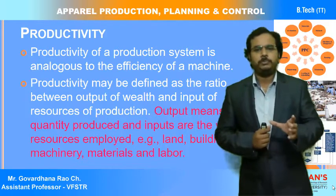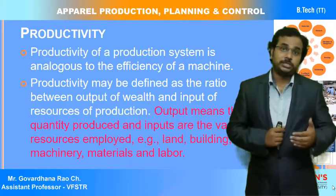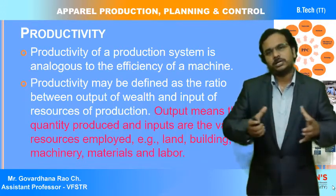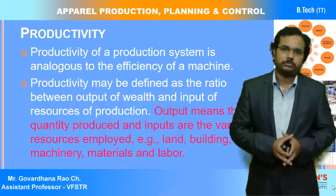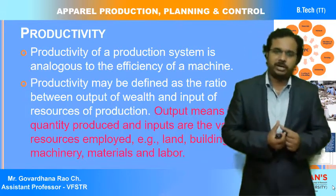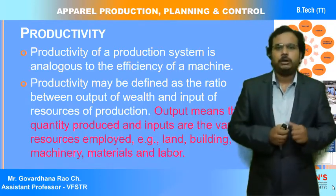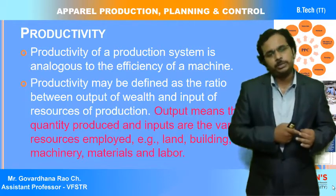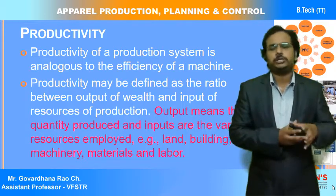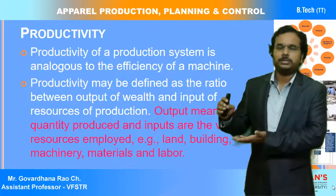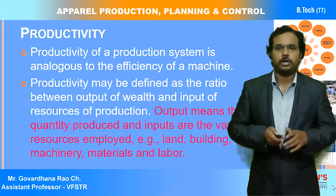Output means the quantity produced and inputs are the various resources employed — for example: land, building, machinery, material, and workers or labor. All together these are inputs, and output means the quantity produced. In a garment industry, output is how many garments are produced at the end of a shift. Inputs include raw material, manpower, energy, land, and machinery. The ratio of output to input is called productivity.